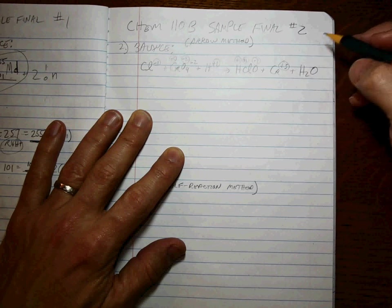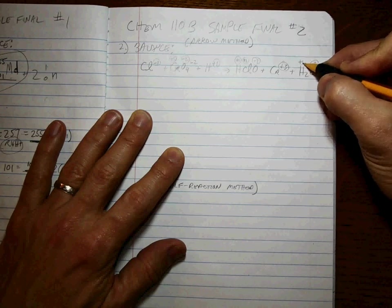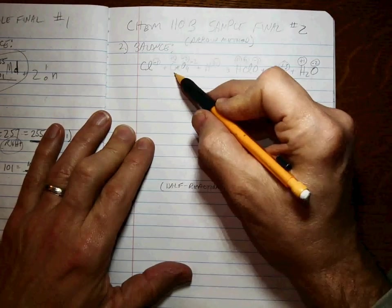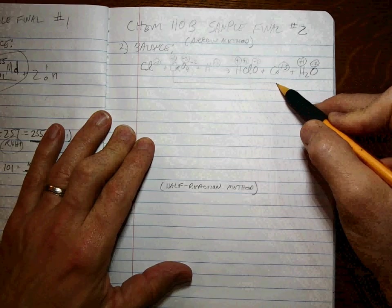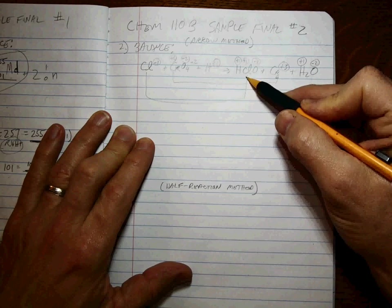Monatomic ion. Oxidation number is the charge on the ion. Oxygen is minus two, plus one. Drawing arrows between things that are changing their oxidation number. So the chromiums are changing and the chlorines are changing.